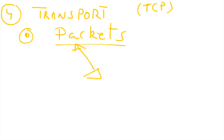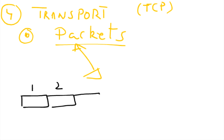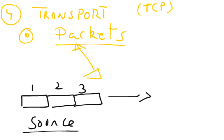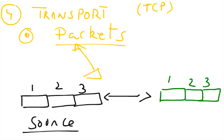In addition, the transport layer corrects the sequence of packets and ensures packets are sent without errors. If packets are sequenced as number one, two, three at the source, it is the responsibility of the transport layer on the receiving computer to reorder those packets in the same sequence and check for errors. Packets on the internet travel via different routes and are re-sequenced upon arrival.